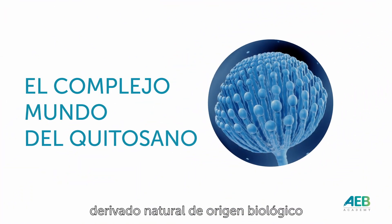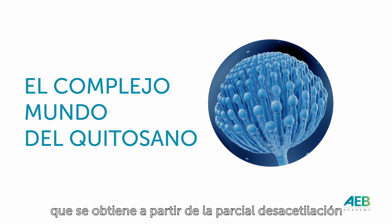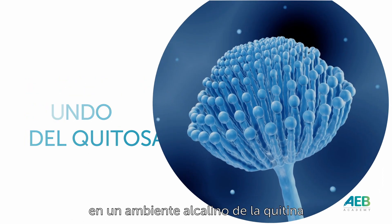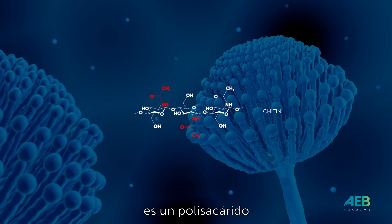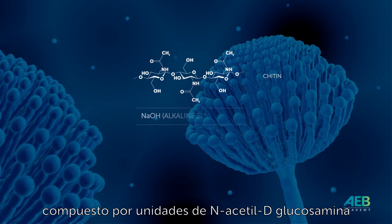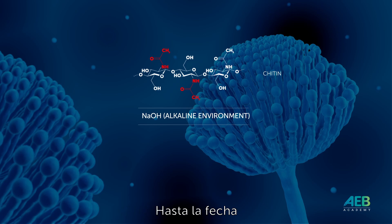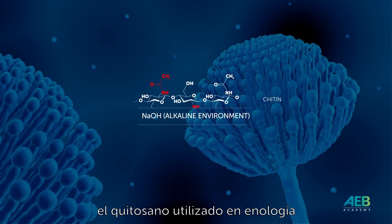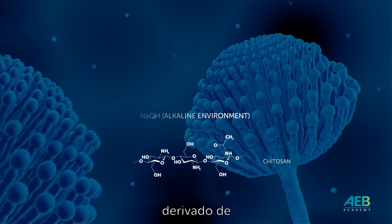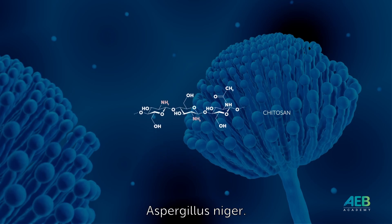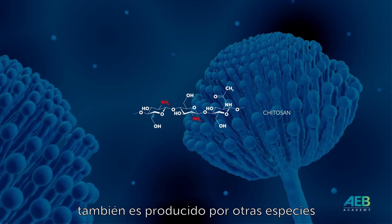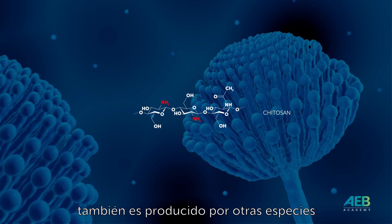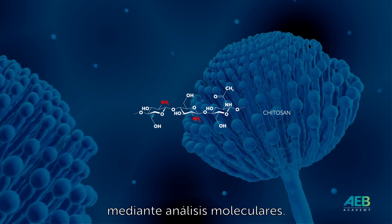Chitosan is a natural derivative of biological origin obtained via the partial deacetylation of chitin in an alkaline environment. Chitin is a polysaccharide composed of N-acetyl-D-glucosamine units. To date, the chitosan used in oenology must be of fungal origin, derived from Aspergillus niger. It is important to understand that chitosan is also produced by other species, which can be easily identified using molecular analysis.